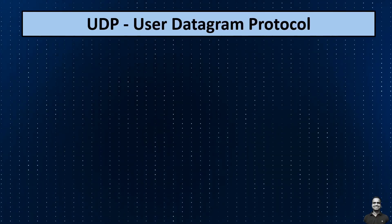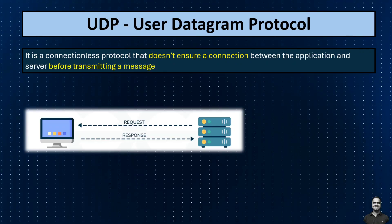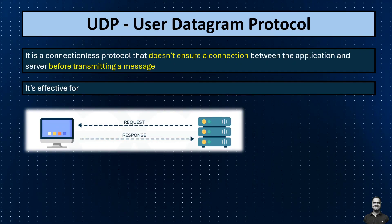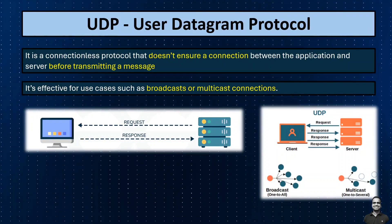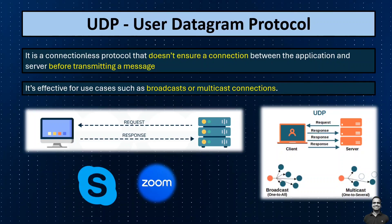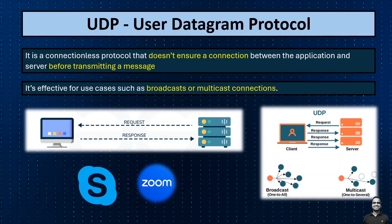UDP — User Datagram Protocol — unlike TCP, is a connectionless protocol that doesn't ensure a connection between the application and server before transmitting a message. It's effective for use cases such as broadcast or multicast connections, like voice over internet protocol applications such as Skype or Zoom, which use UDP for real-time communication. When you make a voice call using one of these applications, UDP packets containing your voice data are sent to the recipient's device without establishing a connection beforehand, which allows for faster transmission but with a higher risk of packet loss.